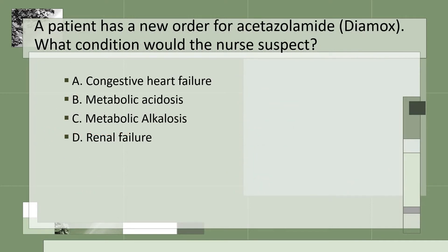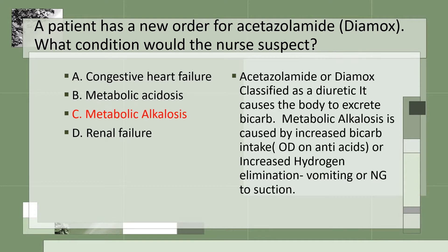In this slide we're trying to figure out why a patient would receive acetazolamide. The nurse would suspect that the patient has metabolic alkalosis. Acetazolamide, or Diamox, is classified as a diuretic — it causes the body to excrete bicarb. Metabolic alkalosis is caused by increased bicarb intake, which would be an overdose on antacids, or increased hydrogen elimination, which would be vomiting or NG suctioning.